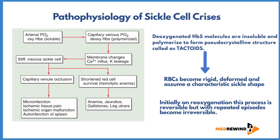In the pathophysiology of sickle cell crisis, arterial oxygen — that is oxygenated HbS — is soluble, whereas capillary venous deoxygenated HbS is polymerized. The membrane changes mainly involve influx of calcium and leakage of potassium, leading to formation of stiff, viscous sickle cells. These sickle cells become occluded in capillary venules, causing micro-infarction, ischemic tissue pain, ischemic organ malfunction, and auto-infarction of the spleen.